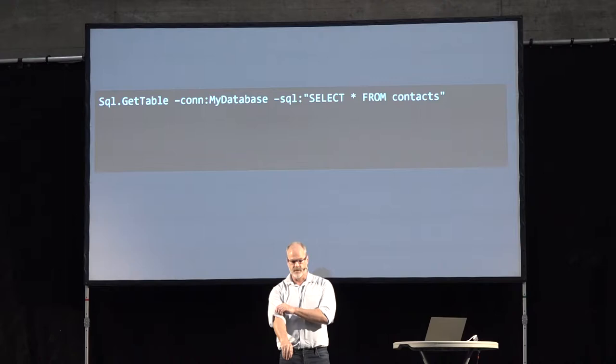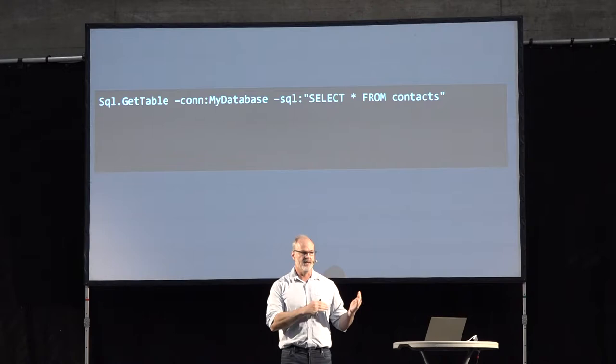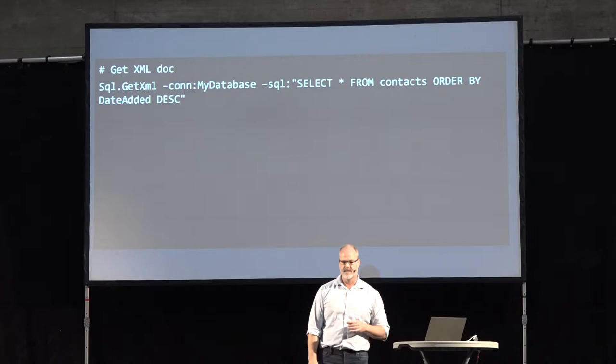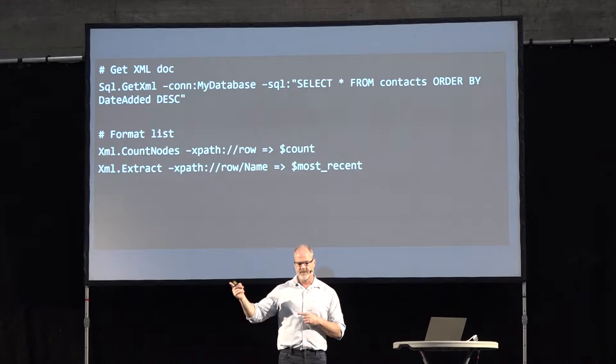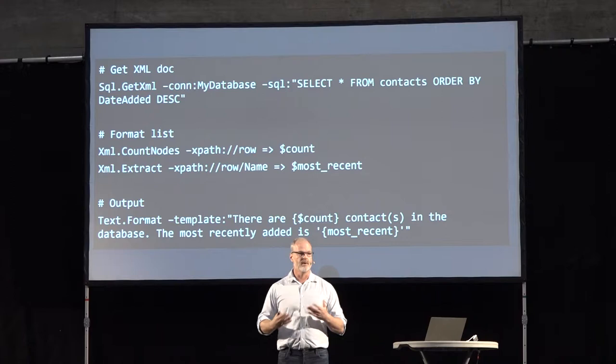I did some SQL — you might look at this and say, my god, letting them do SQL. But if you don't understand SQL Server permissions, you'd be less concerned. Clearly, if you do this, you give them a connection string that's read-only, with access only to certain tables and columns — not an SA account. Here's an example: selecting star from contacts, ordering by date_edit descending, using the FOR XML AUTO option in SQL Server to deliver back an XML document. We count the nodes, extract the most recent one, and wrap that in a sentence: there are X contacts in the database, the most recently added is whatever.